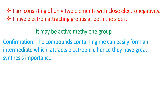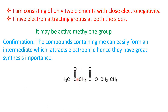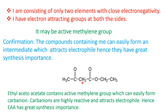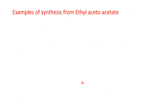Now let's see one such compound. This compound is beta-keto ester — this is ethyl acetoacetate. It contains this active methylene group which is attached at both sides with electron withdrawing groups. Therefore, from this compound, the carbon ion is easily generated from this active methylene group. Thereby, this compound has great synthesis importance. Hence, ethyl acetoacetate contains active methylene group which can easily form carbon ion. Carbon ions are highly reactive and attract electrophile. Hence, ethyl acetoacetate has great synthesis importance.